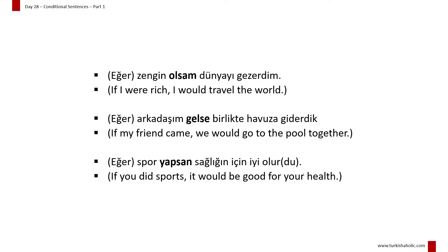To make negative unreal conditionals, we add me/ma before the conditional suffix: Ben yapmasam, sen gelmesen, o bulmasa, biz yemesek, siz üzülmeseniz, onlar gezmeseler.